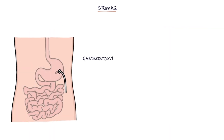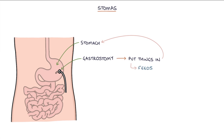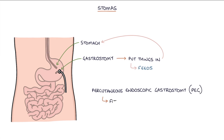A gastrostomy involves creating an artificial connection between the stomach and the abdominal wall. This is used to put things in rather than to drain things out, and it's used for providing feeds directly into the stomach in patients that cannot meet their nutritional needs by mouth. A percutaneous endoscopic gastrostomy, or PEG, refers to when the gastrostomy is fitted during an endoscopic procedure.